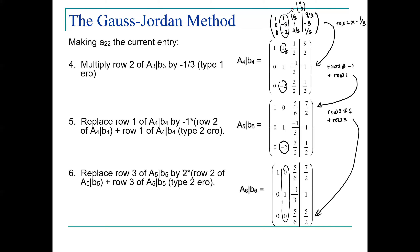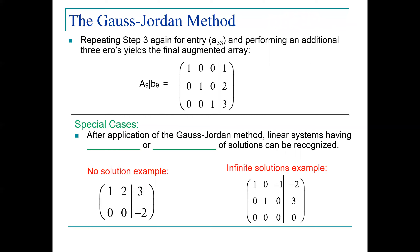Repeating step 3 for the third column, performing additional elementary row operations, we arrive at the final augmented matrix with an identity matrix on the left side and the solution values on the right. The final steps for the third column will be part of the first lab assignment, which you'll find instructions for in Canvas. You will show the steps to complete the Gauss-Jordan method for this example and obtain the final solution.